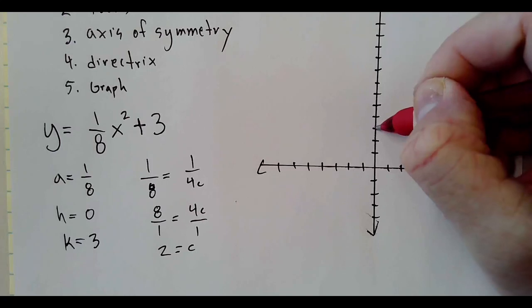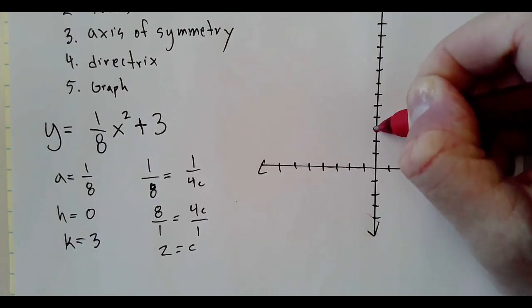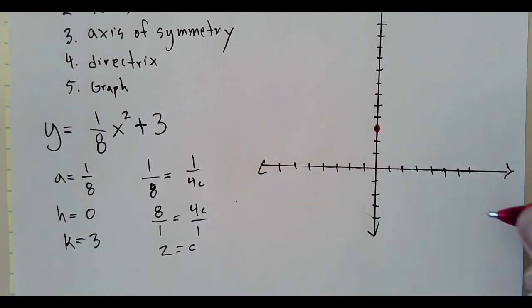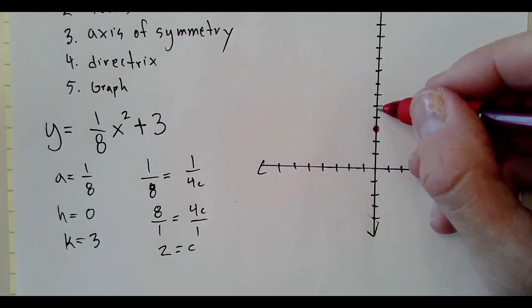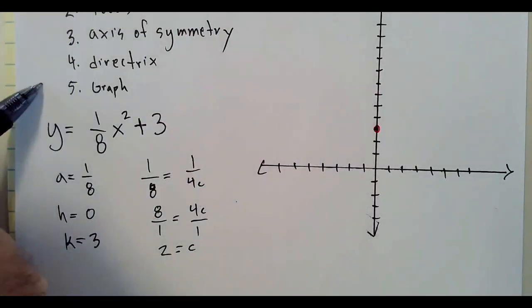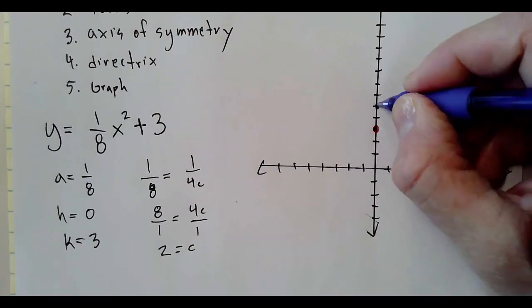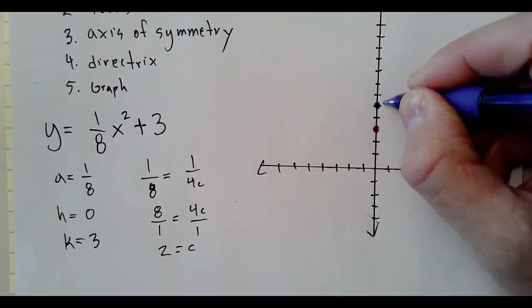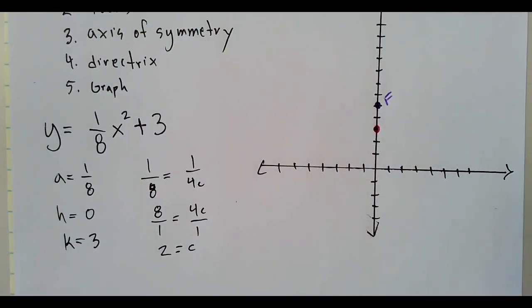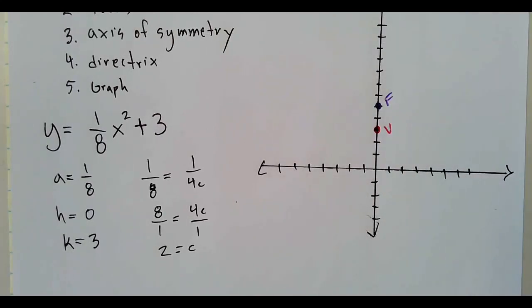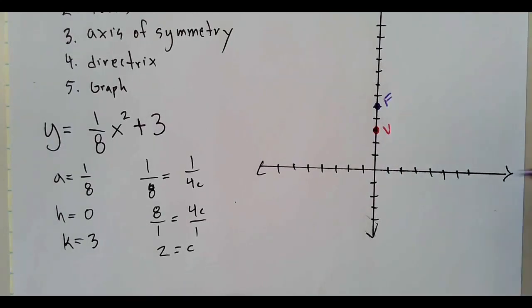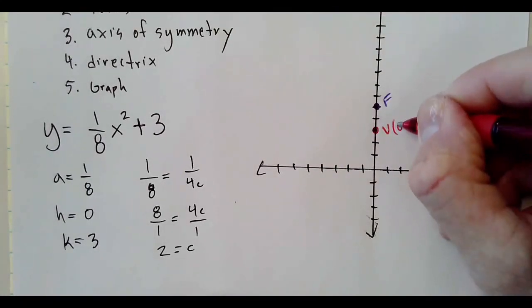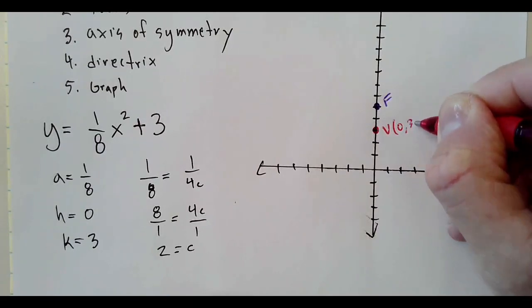So if c equals two and the vertex is right here at (0, 3), and it opens upward, that means our focus is right here—it goes up two from the vertex. Here's the focus, here's the vertex.